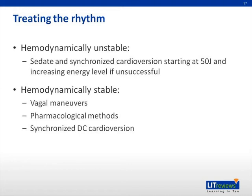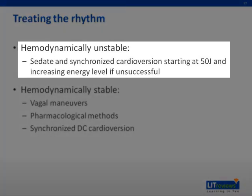When first presented with a patient with SVT, examine the patient and determine if they are hemodynamically stable. Take a set of parameters, listen to the bases of the lungs, and look at the JVP. If the patient is hypotensive, has altered mental state, is tachypneic, has basal crackles and a raised JVP, or has any other sign of cardiopulmonary compromise, treat as hemodynamically unstable SVT. Proceed to sedate the patient and administer synchronized cardioversion starting at 50 joules, increasing the energy level if unsuccessful. The goal of therapy is to disrupt the reentrant circuit by blocking conduction in either limb of the circuit, resulting in a return to normal sinus rhythm.